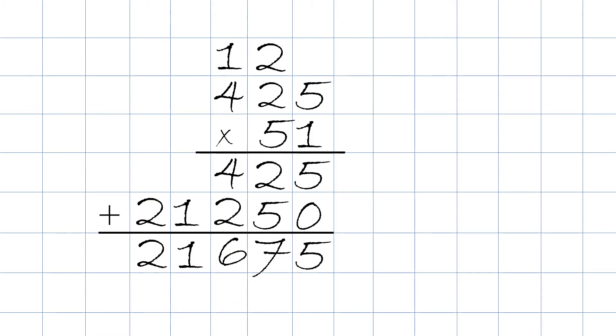And of course, we always double-check. Yes, you could type these numbers in the calculator, but let's do it manually. So we're going to flip the factors. We're going to put 4, 2, 5 on the bottom, and the 51 we're going to put on top.